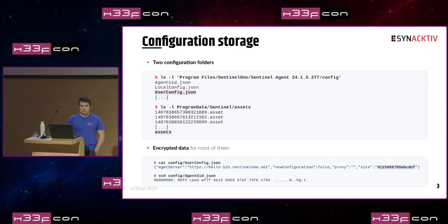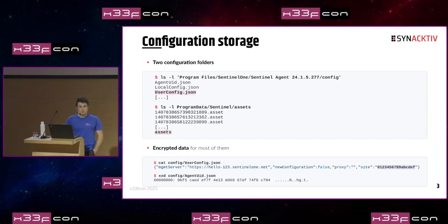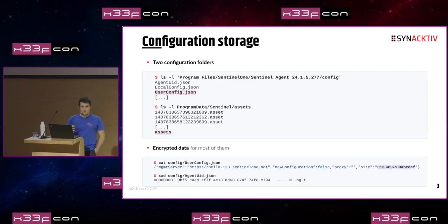If we first look at the configuration folders, we can see that there are two of them. The first one is in Program Files, called config — it holds mainly generic configuration about the agent, such as its console URL and the features enabled in the agent. The second folder is in Program Data, called ASETS, and it holds what the administrators of this particular instance had configured for the agent.